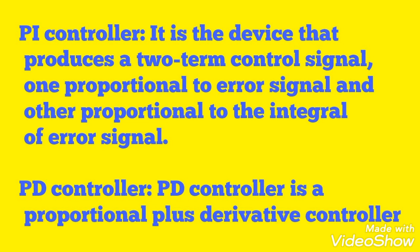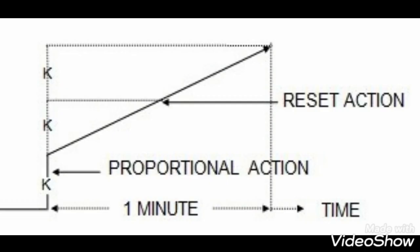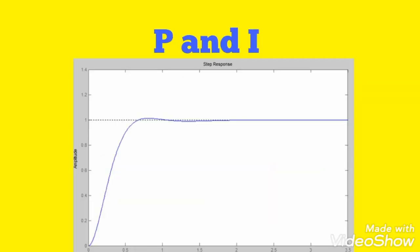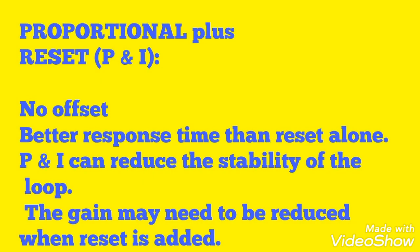The PD controller is a proportional plus derivative controller. Looking at the PI graph, the variation is less compared to P alone because the integral function reduces variation in the output signal. Proportional plus integral has no offset and better response time than reset alone, but P and I can reduce the stability of the loop, so the gain may need to be reduced when reset is added.